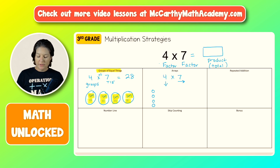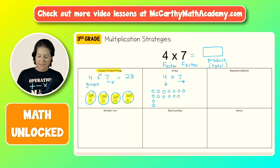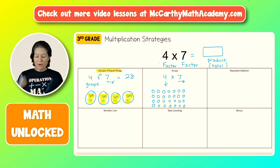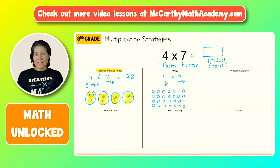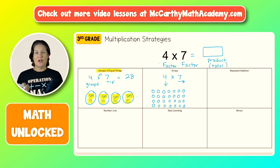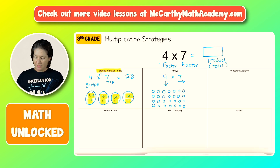Then across each row we place seven: one, two, three, four, five, six, seven — for each of the four rows. A key strategy is to say 'already have' as you fill each row, because sometimes students put down the four rows and then place an extra seven, giving you four times eight instead of four times seven. Saying 'already have one through seven' helps prevent that mistake.